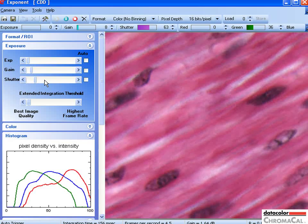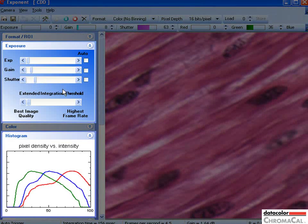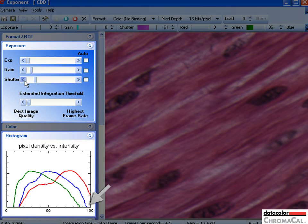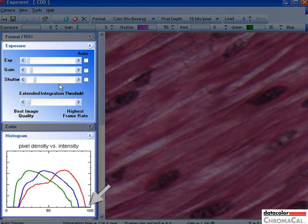Again, adjust exposure here using the shutter slider and adjust until red, green, and blue lines extend to max values, but not extending beyond the maximum value for the x-axis.